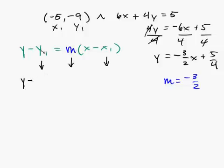So y minus y1 here is going to be negative 9, and my slope, which is negative 3 halves, times the quantity x minus, and bring down my x1, which is negative 5.